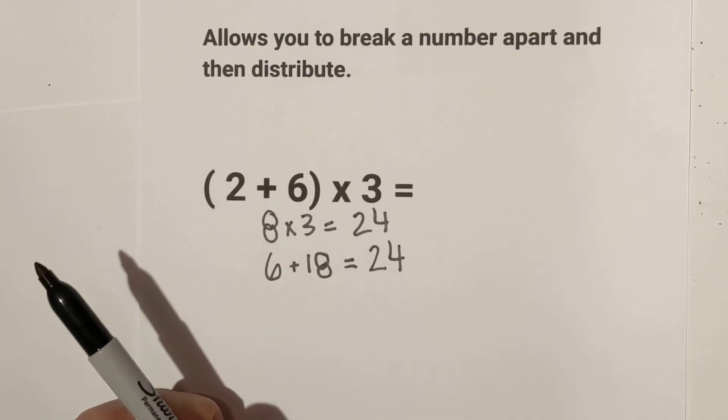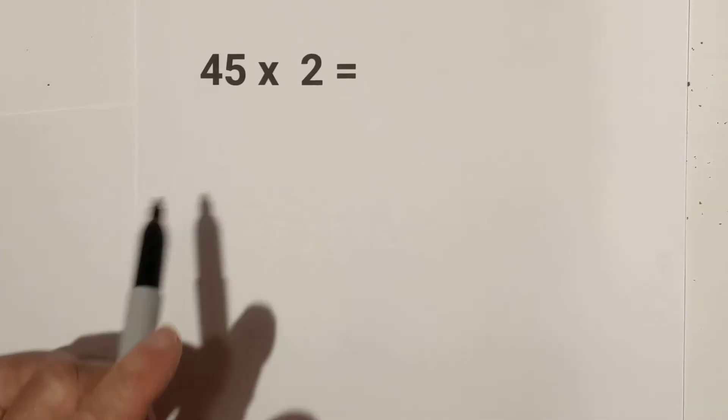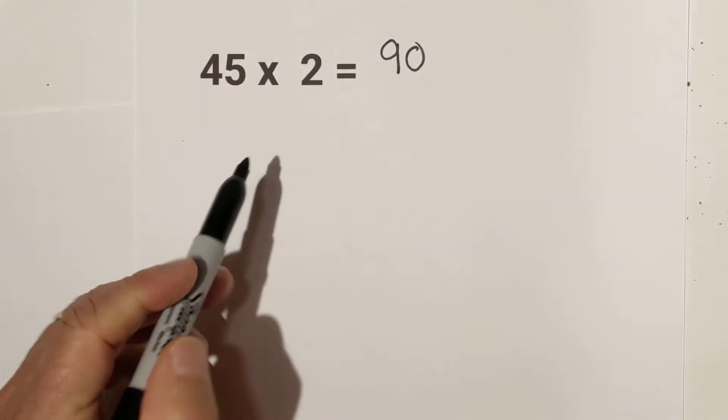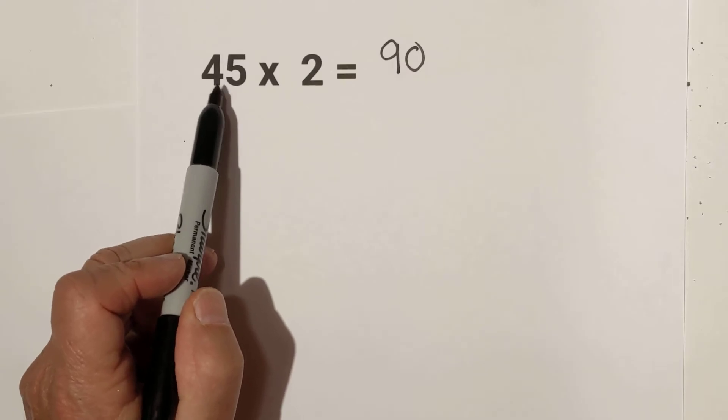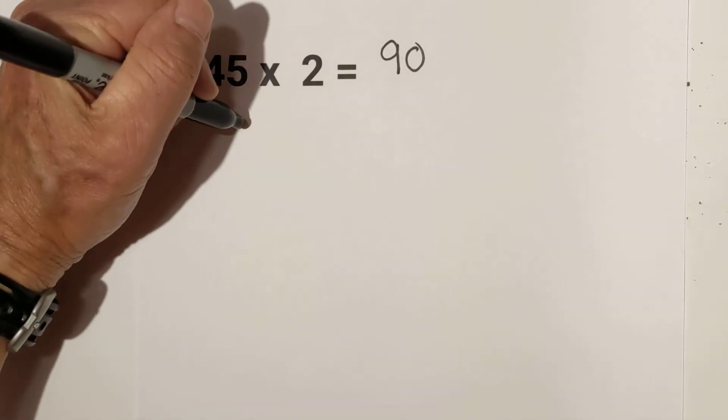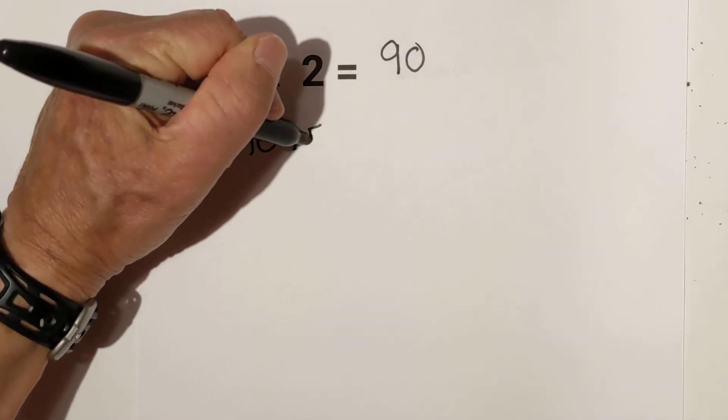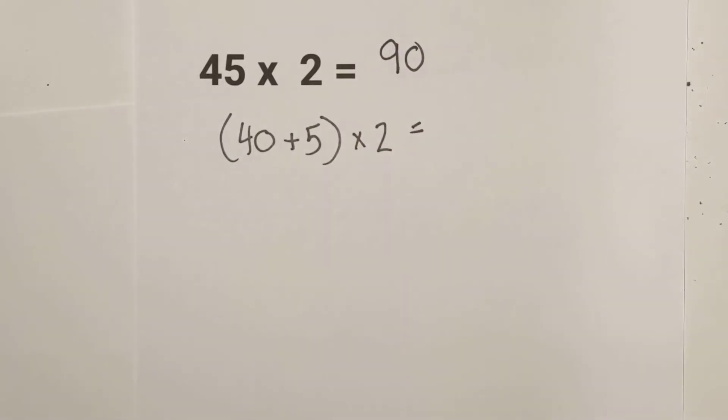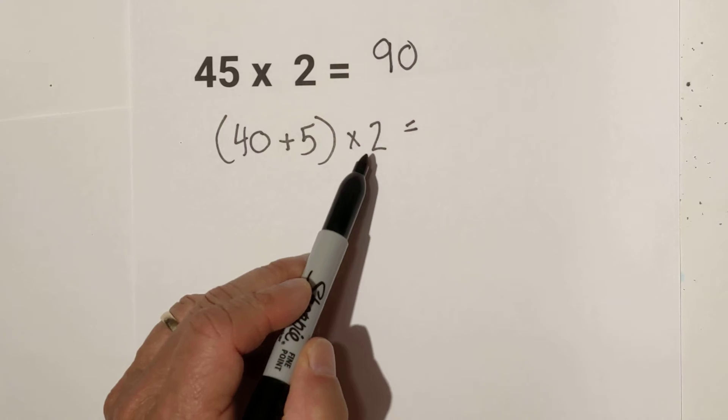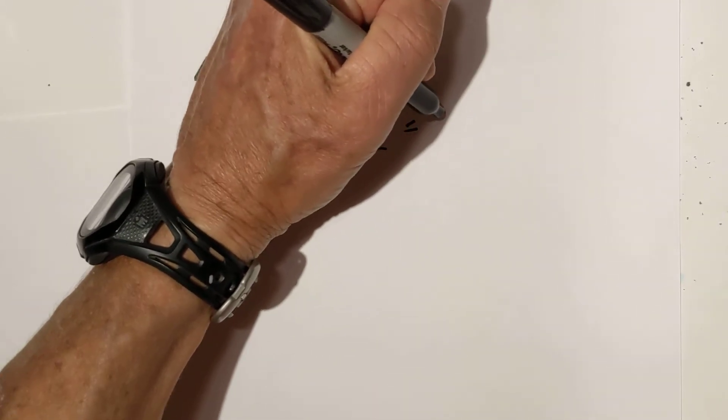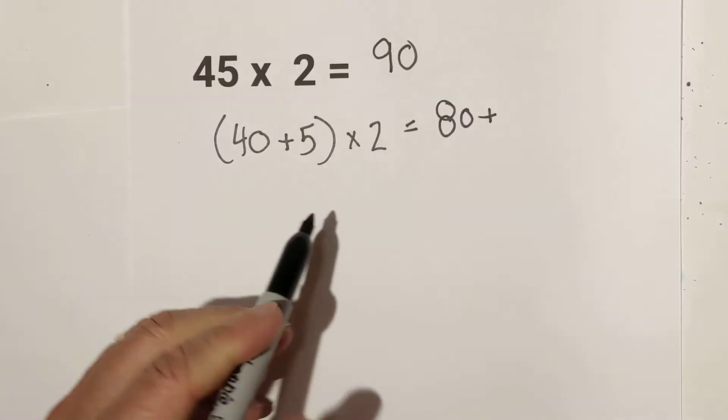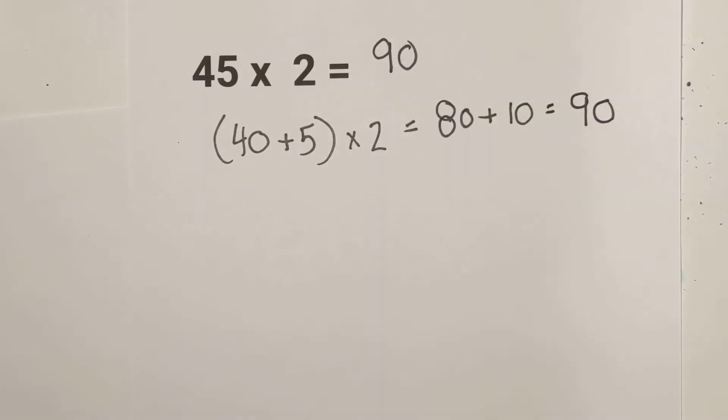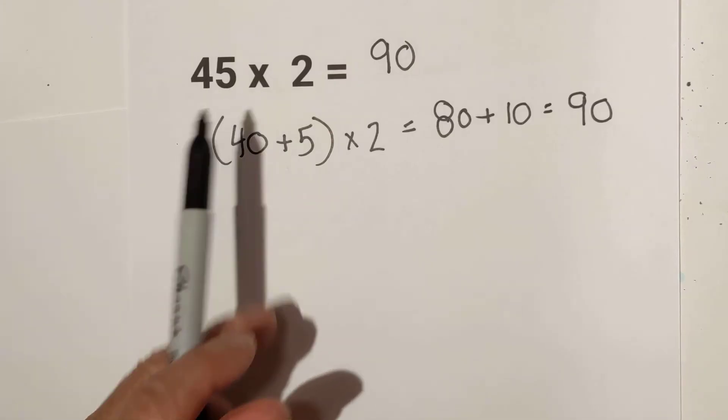This allows you to break a number apart. We have 45 times 2, which equals 90. But the distributive property says you can break 45 apart into 40 plus 5, put parentheses around it, times 2. Then distribute the 2: 2 times 40 is 80, plus 2 times 5 is 10, which equals 90.